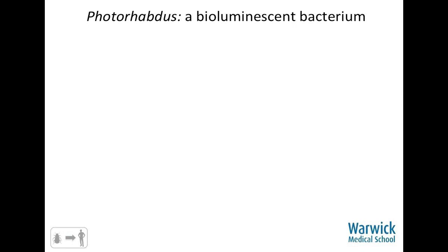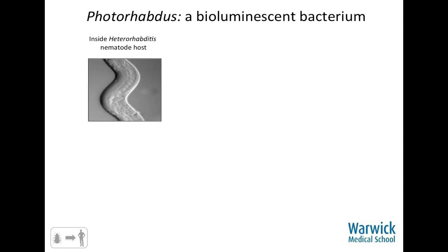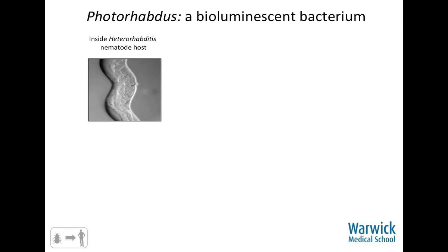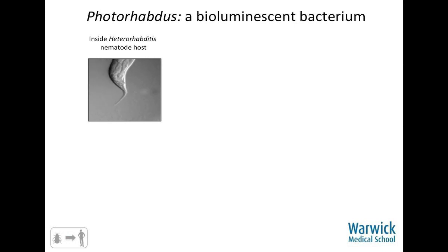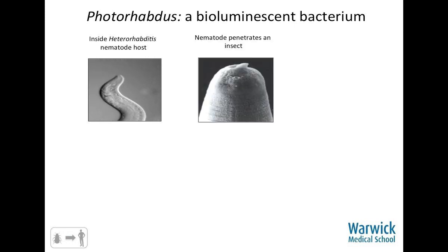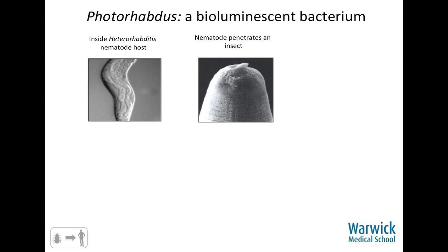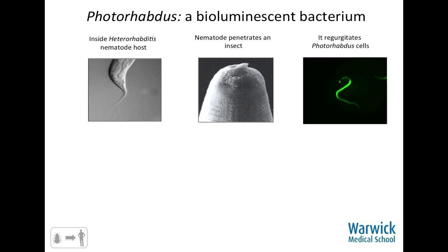Photorhabdus is a bioluminescent member of the Enterobacteriaceae — and I'm not so much of a non-biologist as to not know that that's a nematode, not a bacterium. The bacteria are carried in the gut of an insect-pathogenic, or entomopathogenic, nematode worm called Heterorhabditis, that lives in the soil. This worm crawls around, and on its mouth it has a little tooth it uses to scratch its way into an insect host it finds in the soil.